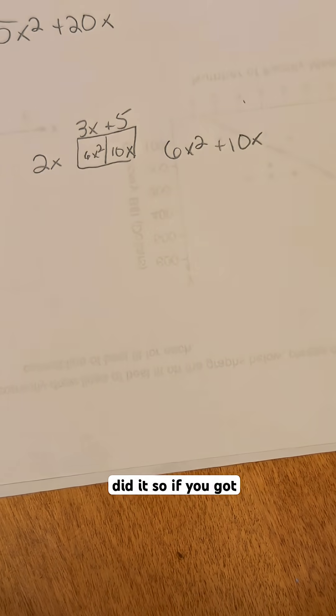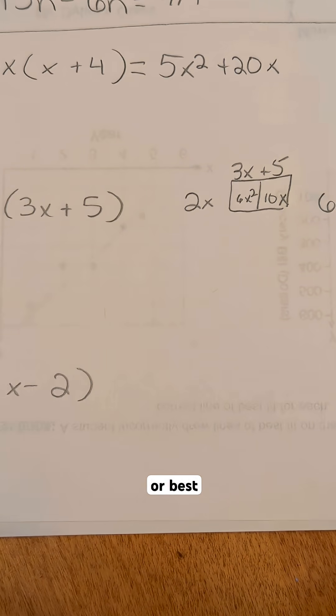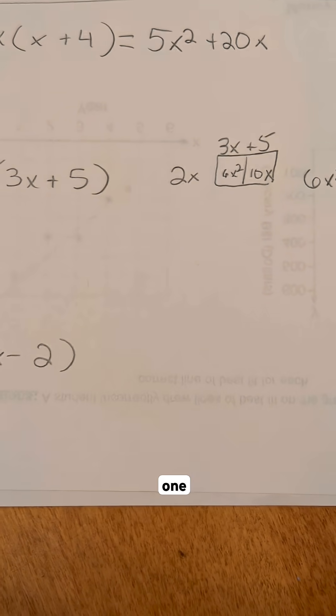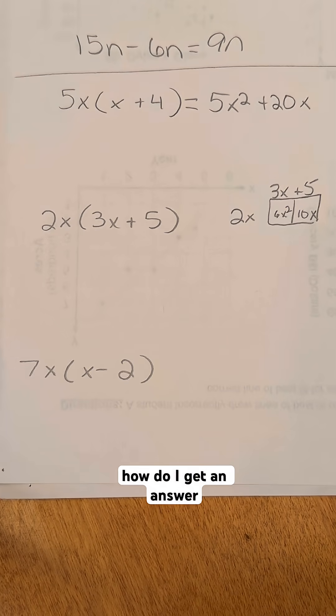So that would be how I did it. If you've got two different methods, whichever one, let me know in the comments which one you like to do first or best. Let's try that last one on your own. How do I get an answer for 7x times x minus two?